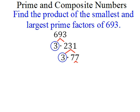If you try 2, it won't work. 3 won't work, 5 won't work, but 7 goes into 77 11 times. Therefore, I'm done. I've got all prime factors now.